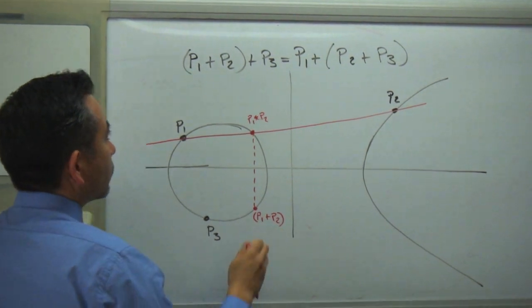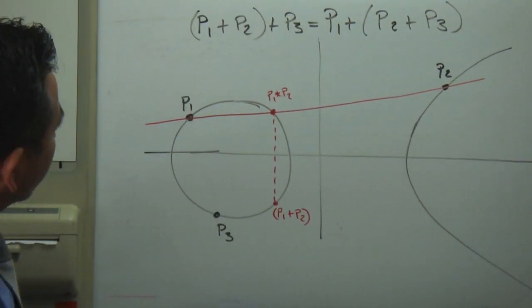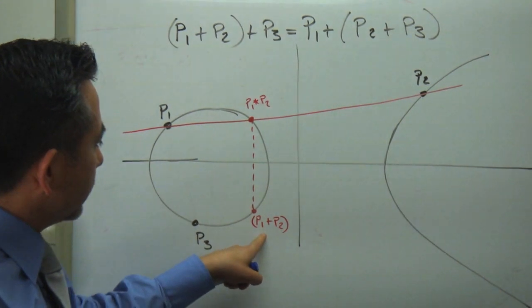Then this point becomes P1 plus P2. So this is this part. So P1 plus P2 is this point.